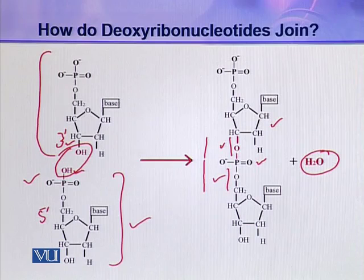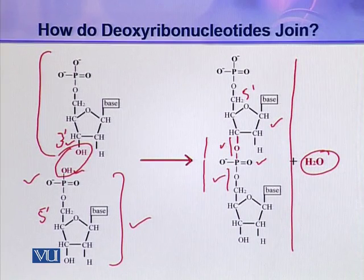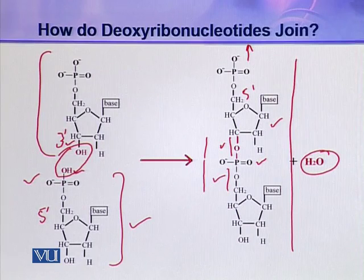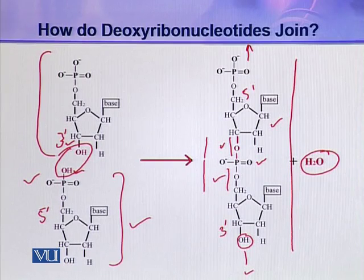All successive nucleotides are linked through this phosphodiester linkage. This whole molecule is a dinucleotide. In this dinucleotide, you can see the phosphate attached at 5 prime is free to form an ester linkage with another nucleotide. Similarly, the hydroxyl present at 3 prime is available to make an ester linkage with another nucleotide. In this way, the chain grows and makes a polynucleotide chain.